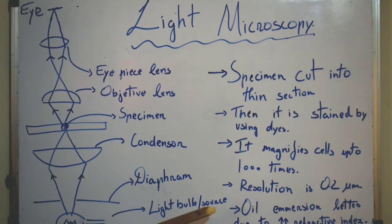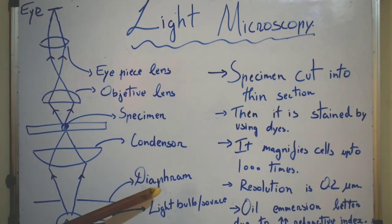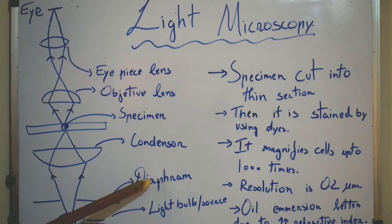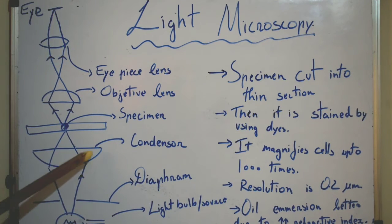The light from the light bulb or an external source like sunlight using mirror first enters the diaphragm. Now diaphragm is the part of microscope which restricts the amount of light which enters the microscope or which controls the amount of light which enters the microscope.